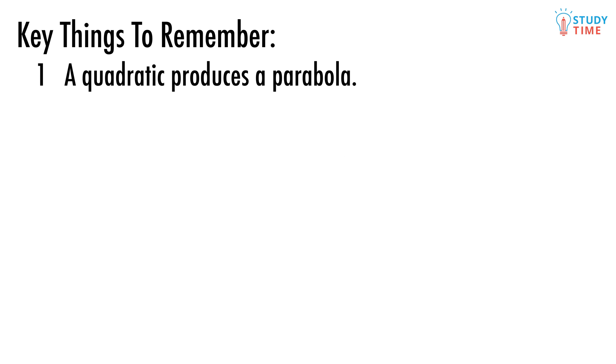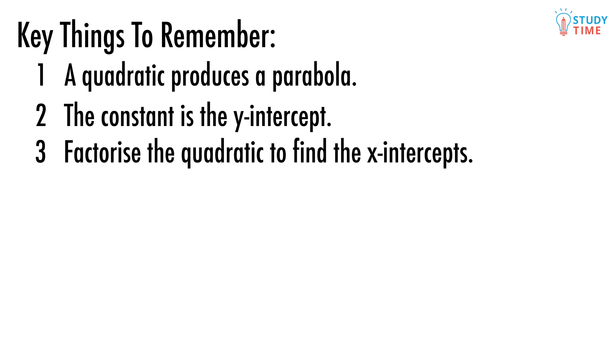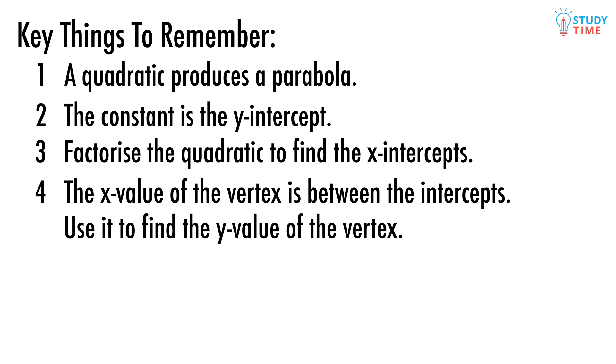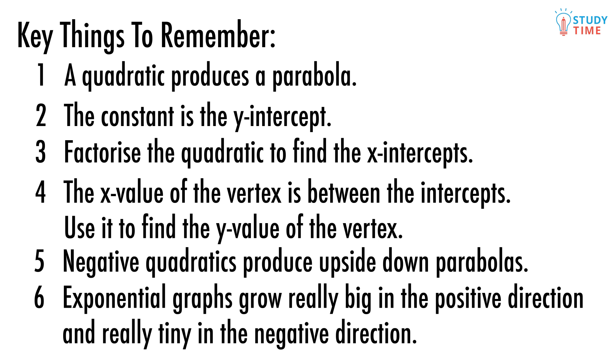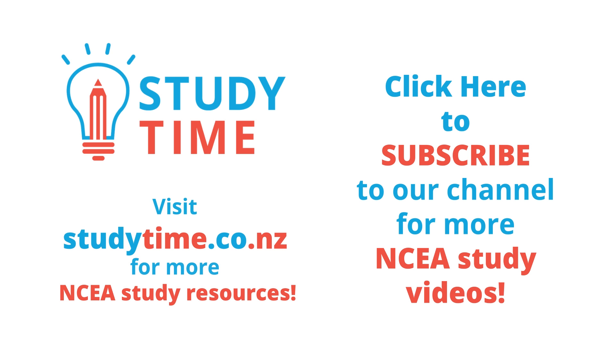Remember, a quadratic produces a parabola. The constant is the y-intercept. Factorize the quadratic to find the x-intercepts. The x-value of the vertex is between the x-intercepts. Use it to find the y-value of the vertex. Negative quadratics produce upside-down parabolas. Exponential graphs grow really big in the positive direction and really tiny in the negative direction.